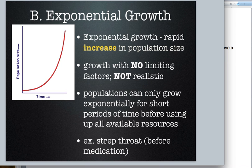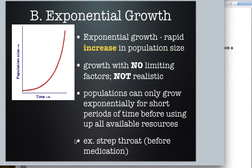We can look at graphs of population growth. This is an exponential growth graph — notice over time the population size gets larger and then almost doubles, going nearly straight up. You know this as an exponential graph in math class; it means rapid increase in population size. This represents population growth with no limiting factors, which is not realistic. For example, strep throat bacteria eventually eat all the lining of your throat and run out of food. Very few populations can sustain exponential growth for very long.